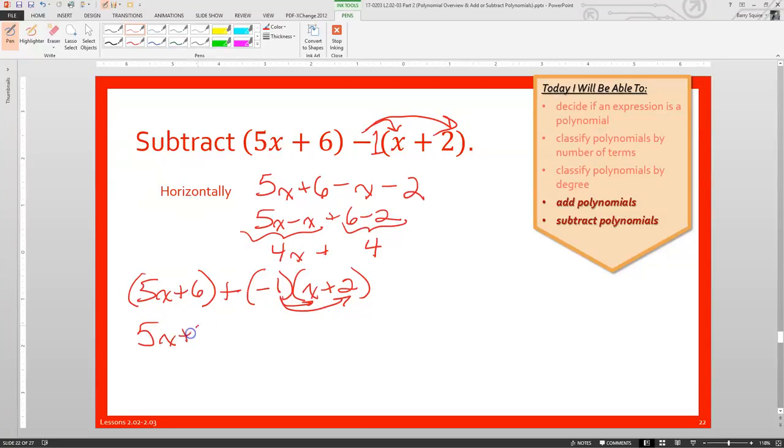So we'll get 5x plus 6 plus negative x. I'll write it out like that. Plus negative x plus negative 2. And then we know adding a negative is the same thing as subtracting. 5x plus 6. And we're back to where we started. So 5x minus x is 4x. And 6 minus 2 is 4. So that's how we might subtract horizontally. Not quite as straightforward as adding. But you can make it as straightforward as adding, just by changing our subtraction to adding the negative or adding the opposite.